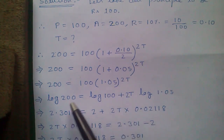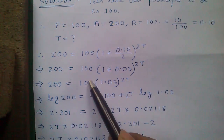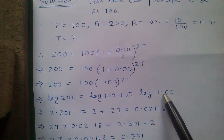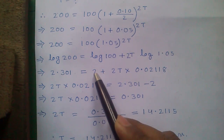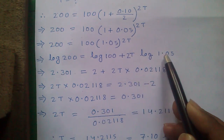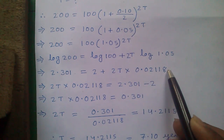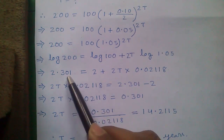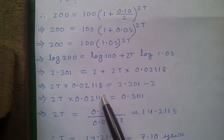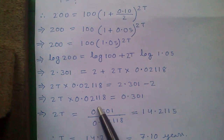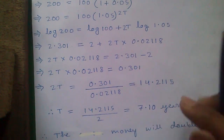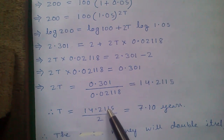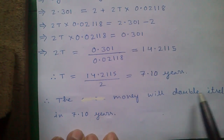To remove the power 2T, we take log of both sides: log 200 = log 100 + 2T × log 1.05. Log 200 is 2.301, log 100 is 2, and log 1.05 is 0.0218. So 2T × 0.0218 = 0.301, giving 2T = 14.2115, and T = 14.2115 / 2 = 7.10 years. So the money will double itself in 7.10 years.